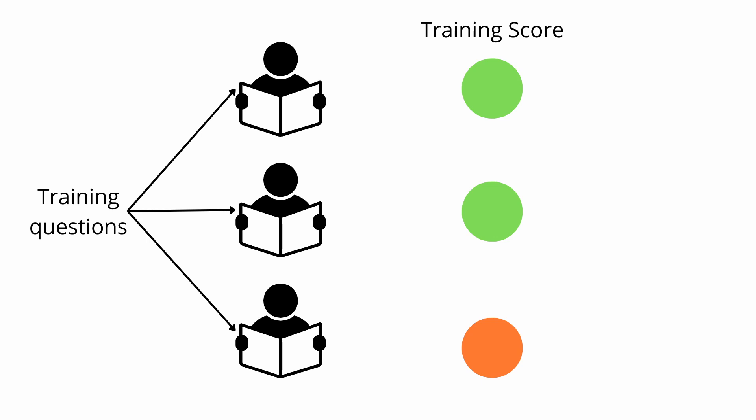The students all study those same training questions to improve and get better at the tasks they need to solve. Afterwards you can of course quiz your students on those specific questions and that would give you a training score. Now it's likely that most students will do well on those training questions because they have studied them for a long time. Here this is indicated by green bubbles.